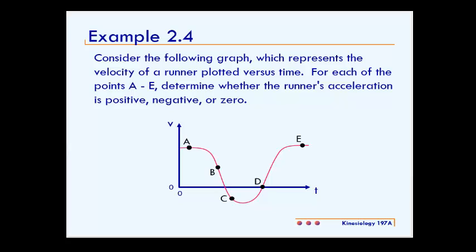So today we will be solving example 2.4, which reads: consider the following graph, which represents the velocity of a runner plotted versus time. For each of the points a through e, determine whether the runner's acceleration is positive, negative, or zero.